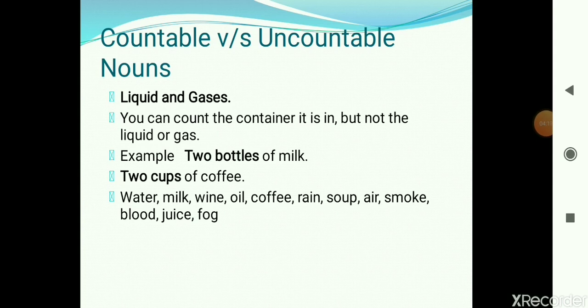Liquids and gases are generally uncountable nouns. For example, milk — you cannot count milk because it is uncountable. You can count the container in which it is kept, for example two bottles of milk — here you are counting the container, not the milk. Some more examples of liquids and gases that are uncountable are water, milk, wine, oil, coffee, rain, soup, air, smoke, blood, juice, fog, and so on.